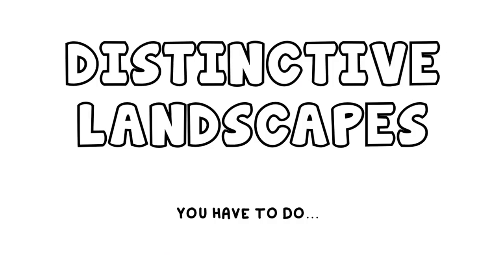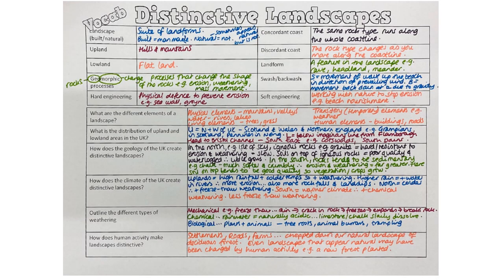The other compulsory topic for paper one is distinctive landscapes. We think they will focus more on coasts in this section since rivers are covered in the fieldwork question. You need to know your UK landscapes — a landscape means a suite of landforms, a number of different landforms over a large area. Landscapes can be built by people or natural — untouched by humans. Remember sometimes a landscape appears natural but isn't, where humans have planted hedges or trees that wouldn't grow there naturally. Upland areas means hills and mountains; lowlands means flatland.